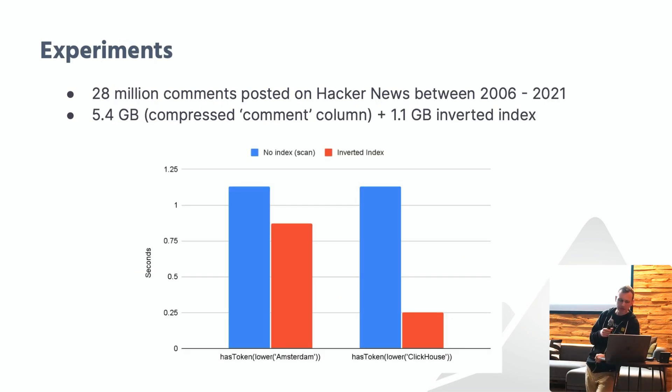Let's do some measurements. I made a small experiment and imported 28 million comments posted on Hacker News, written between 2006 and 2021. The size of the compressed comment column was 5.4 gigabytes, and the inverted index was 1.1 gigabytes in size. There's currently a bug in the code, so it will not show the precise size in the skipping index monitoring view, so I calculated this number by hand. I then ran two simple queries. The first query returns all the comments which contain Amsterdam, and the matching was case insensitive. Without inverted index, the runtime was 1.13 seconds on my system. With inverted index, it was 0.87 seconds.